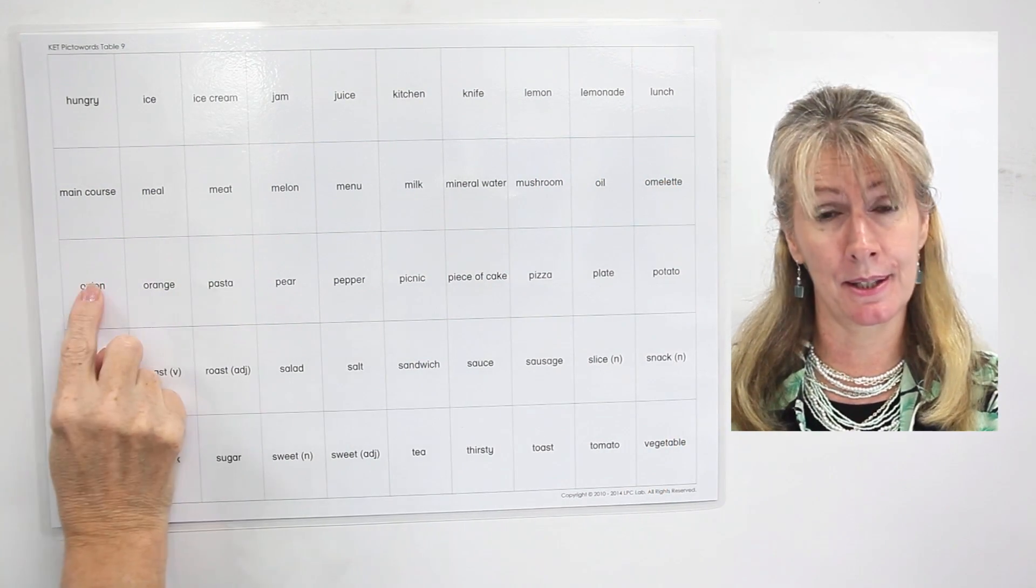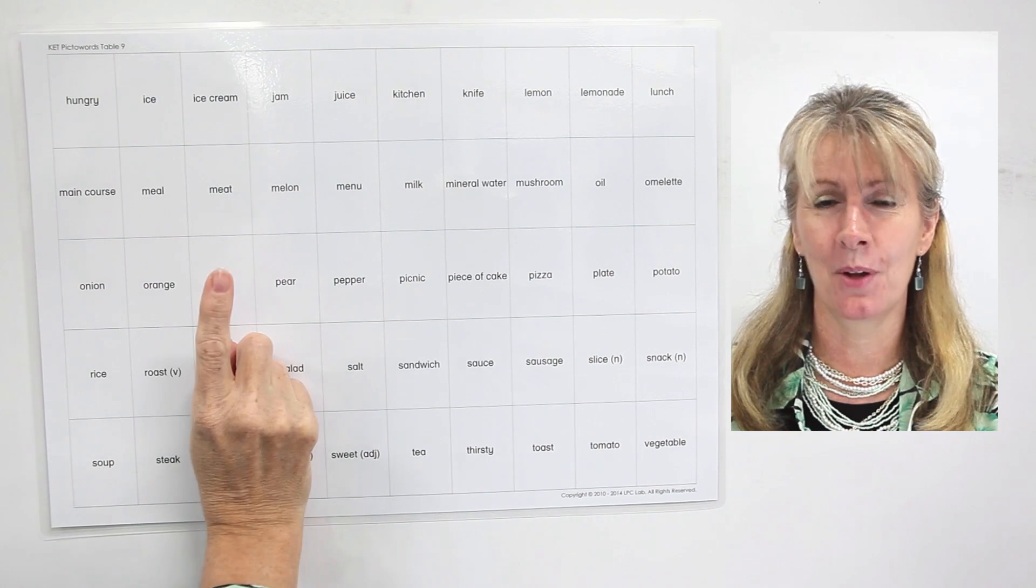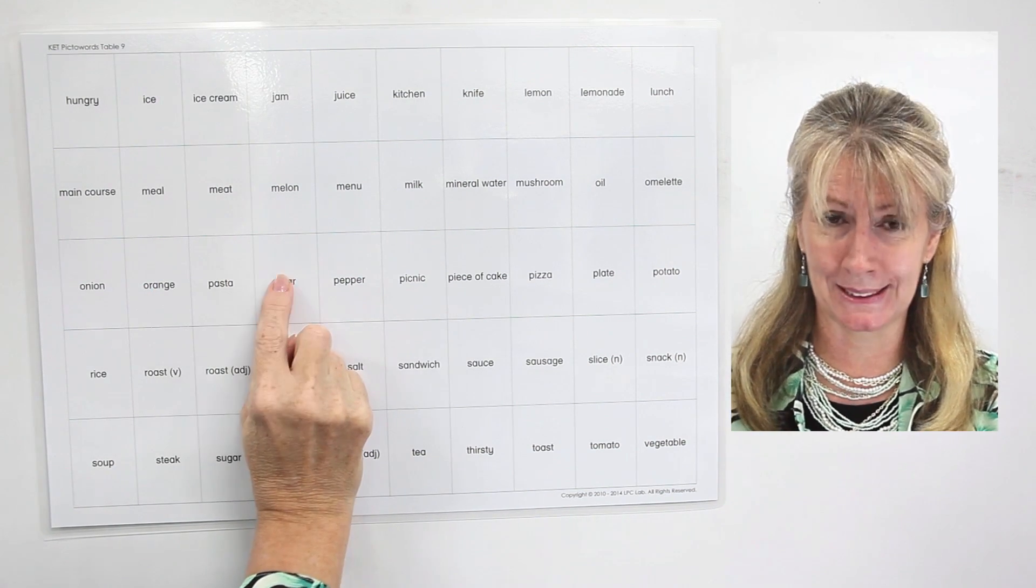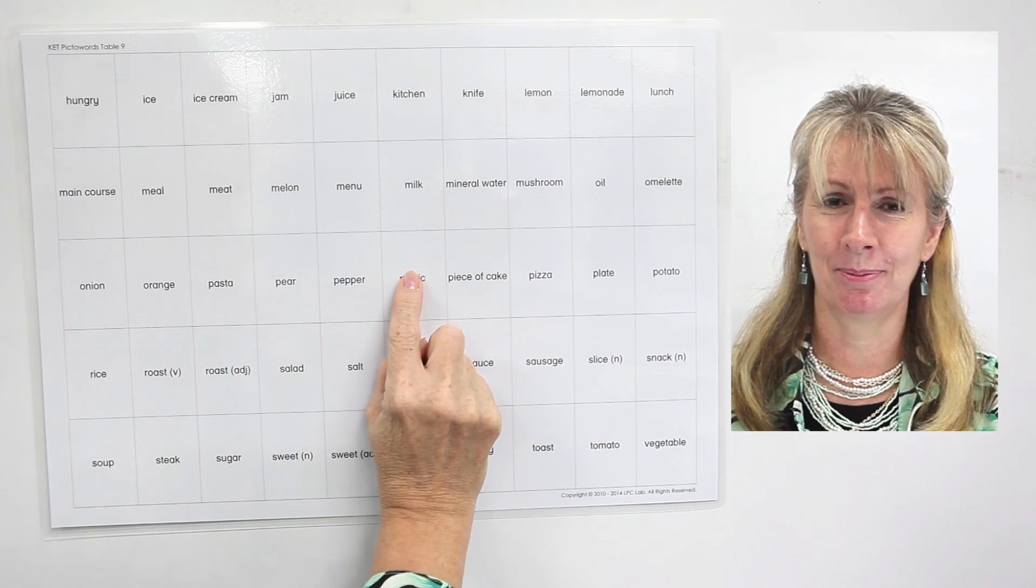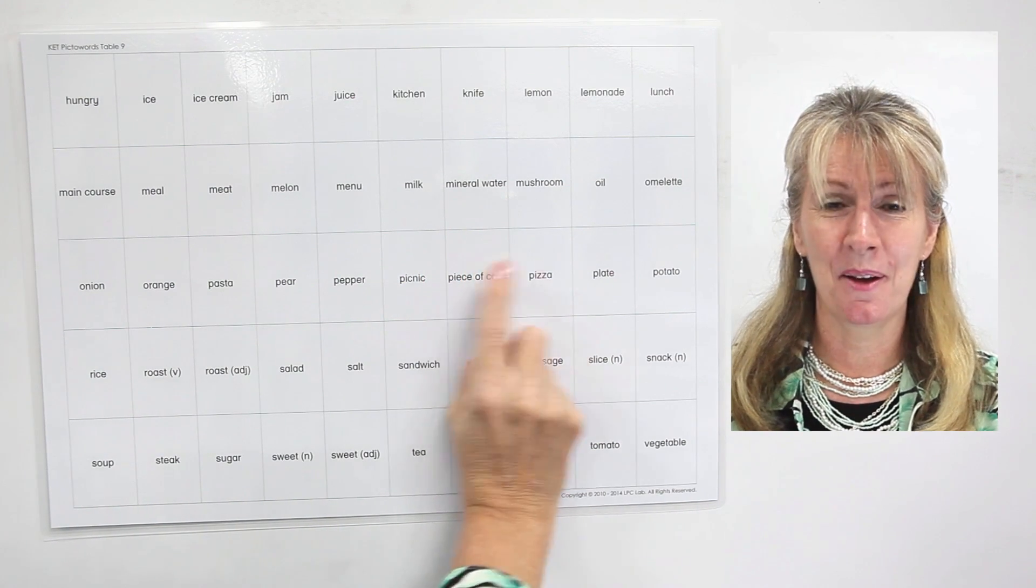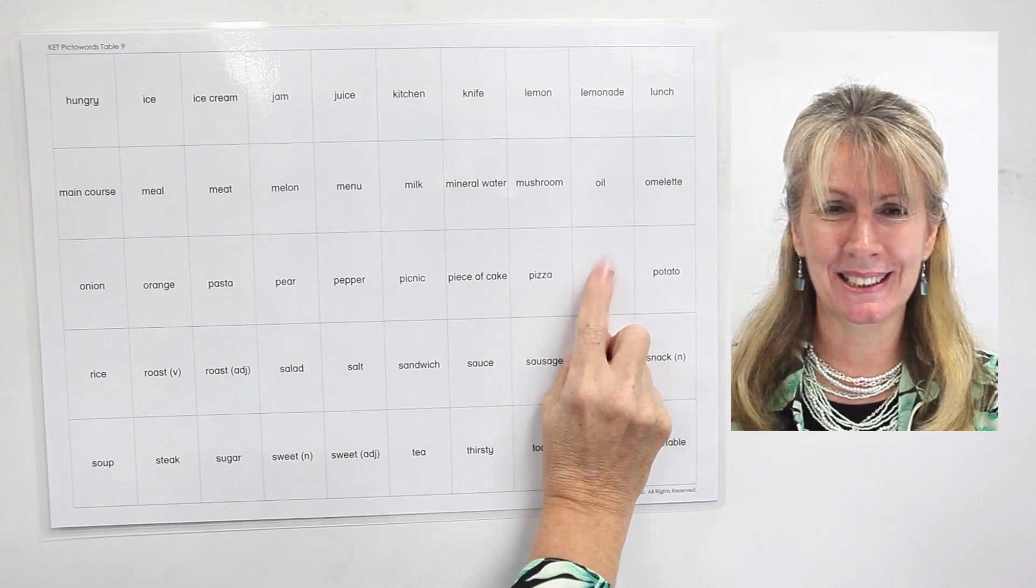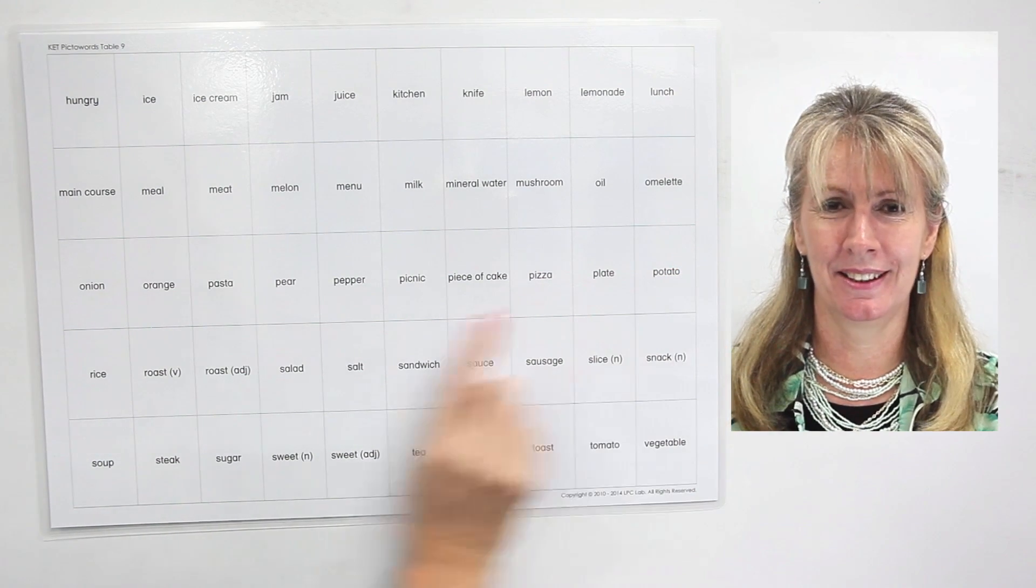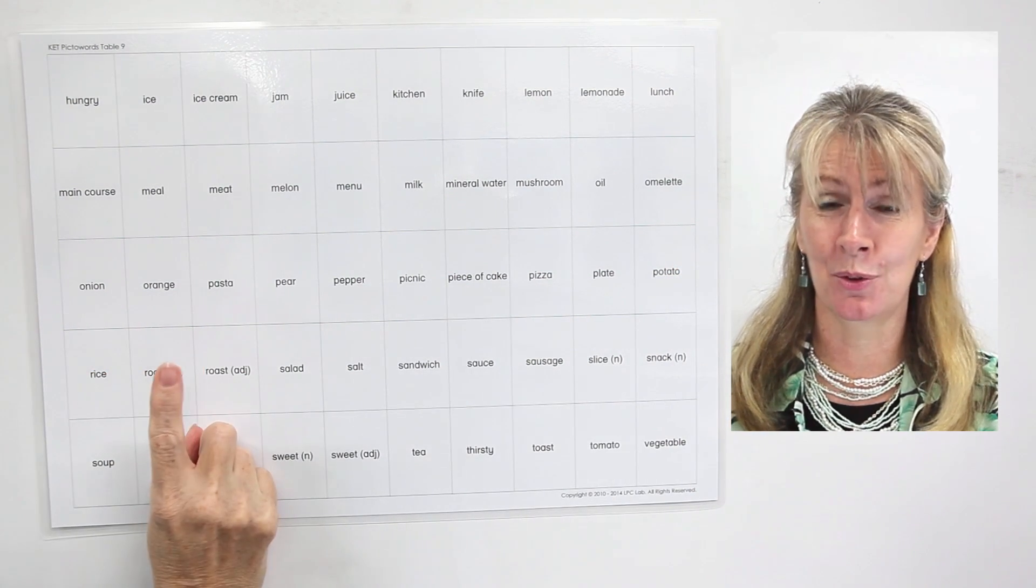Onion, orange, pasta, pear, pepper, picnic, piece of cake, pizza, plate, potato, rice.